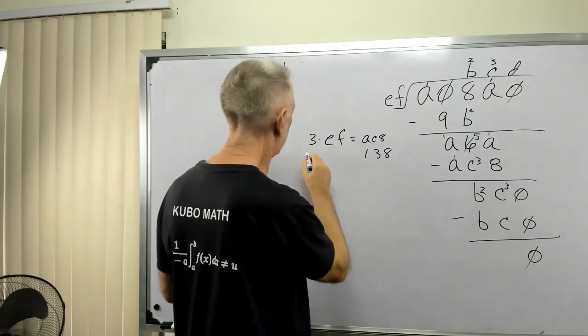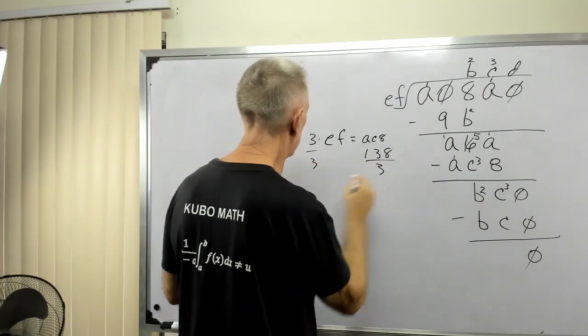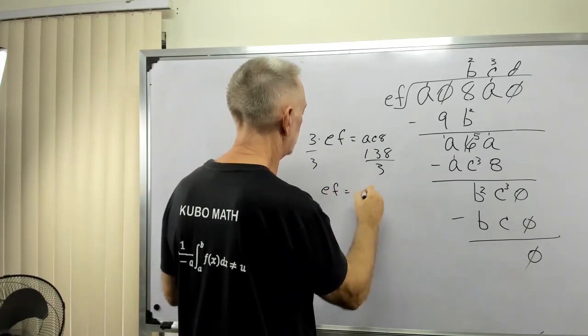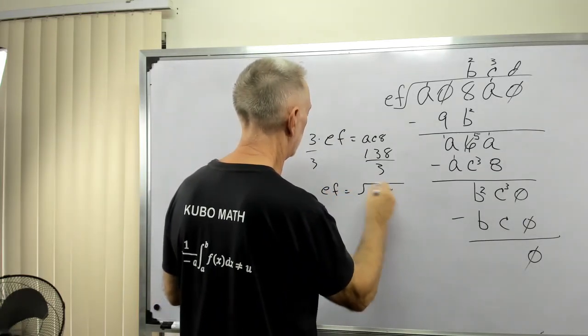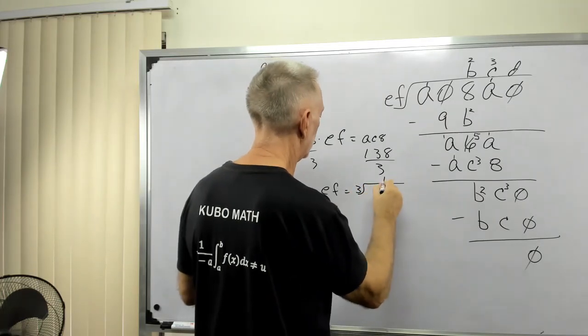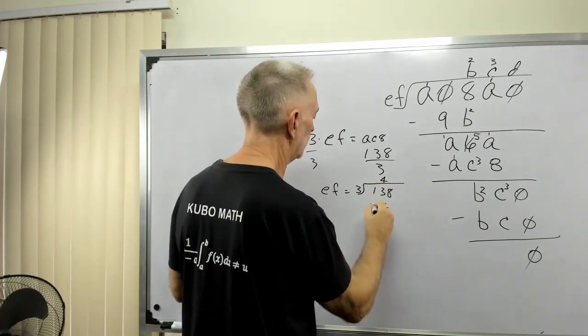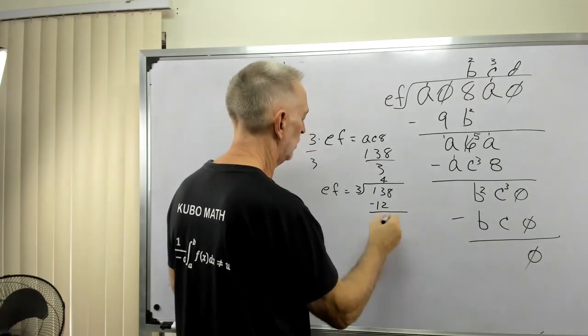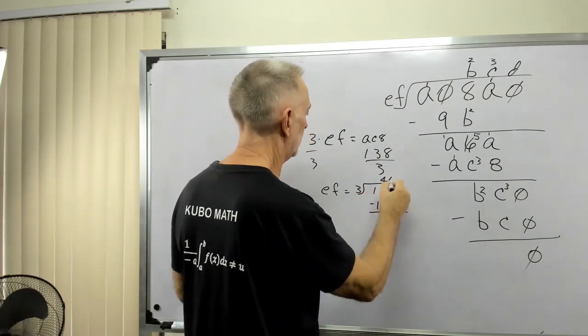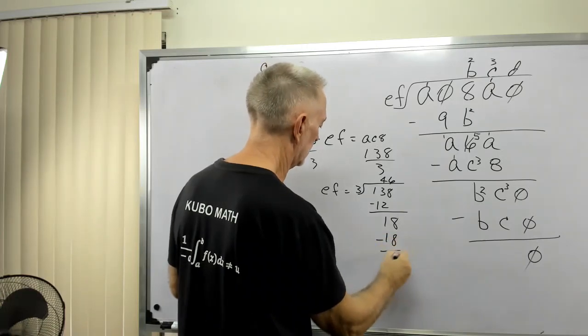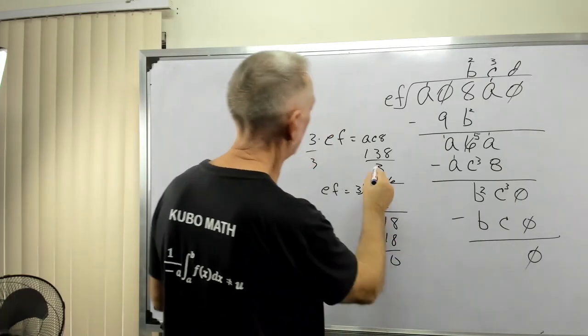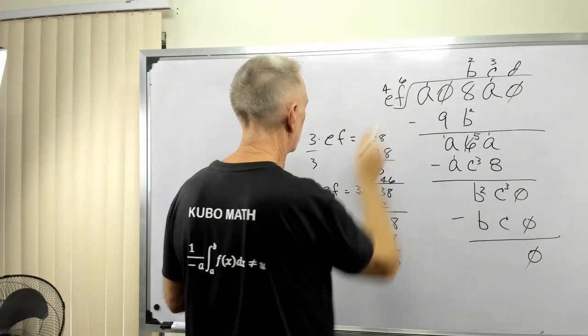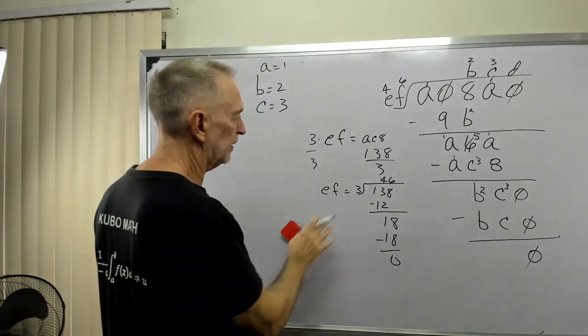Well, what does that mean? If I divide both sides by 3, that would equal EF. So that's 138 divided by 3. Well, 4 times 3 is 12. 13 minus 12 is 1. Bring down the 8. 18 divided by 3 is 6. 6 times 3, 18. So E would be 4, F would be 6, if that's true.